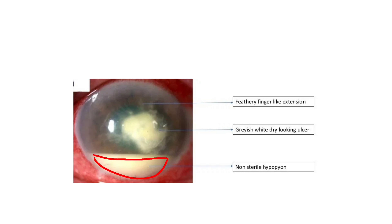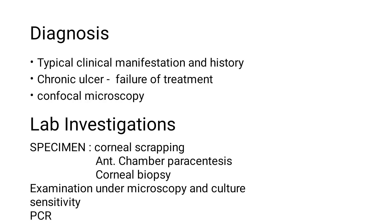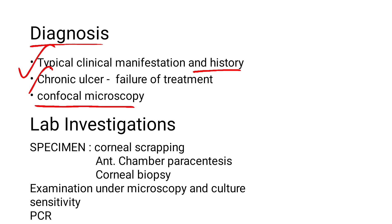For diagnosis, we look at typical clinical manifestations — the signs — plus a history of injury with vegetative material or animal tail. Confocal microscopy can directly reveal the fungus and is used for confirmation of Fungal Corneal Ulcer.